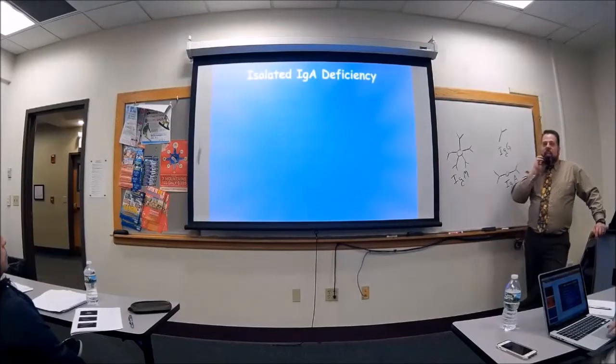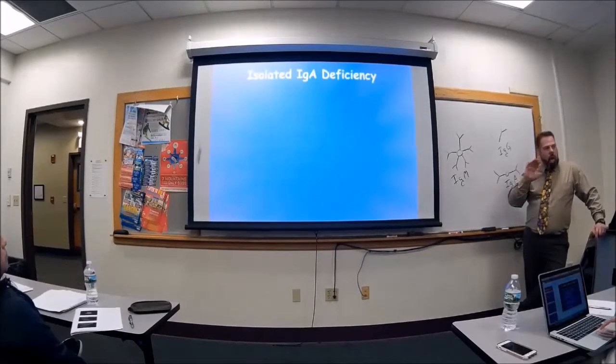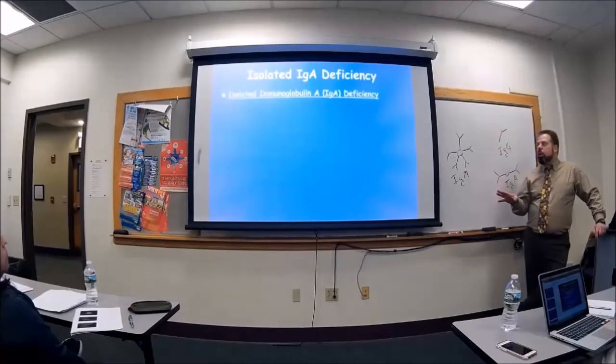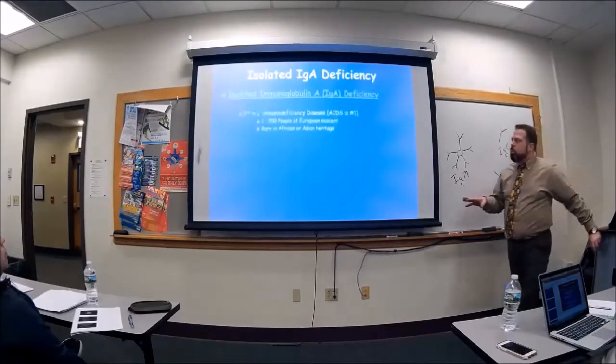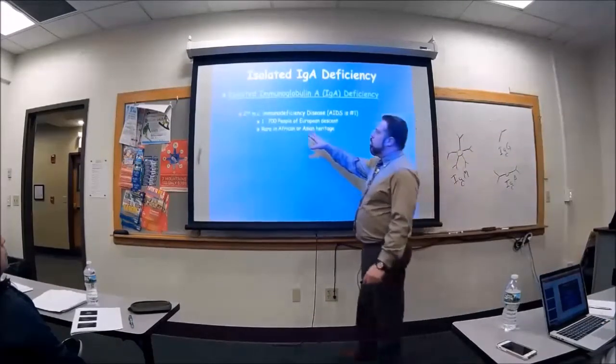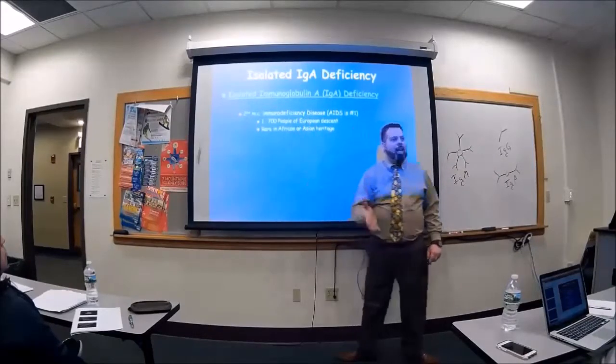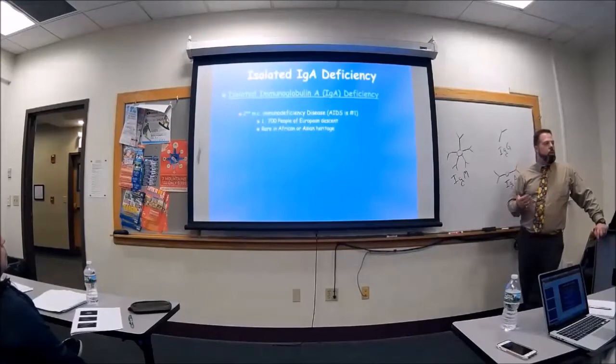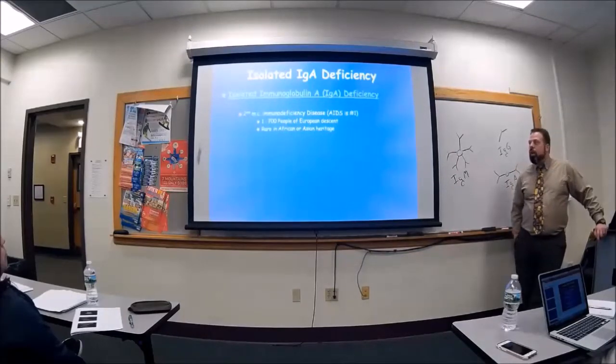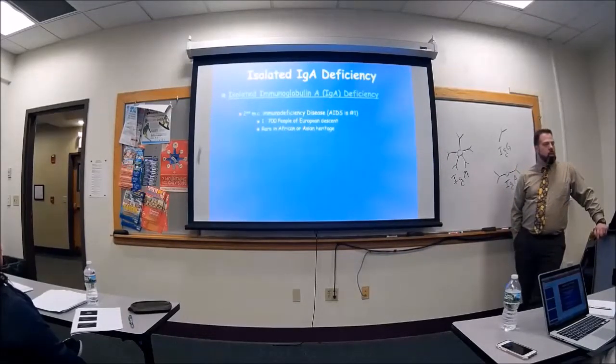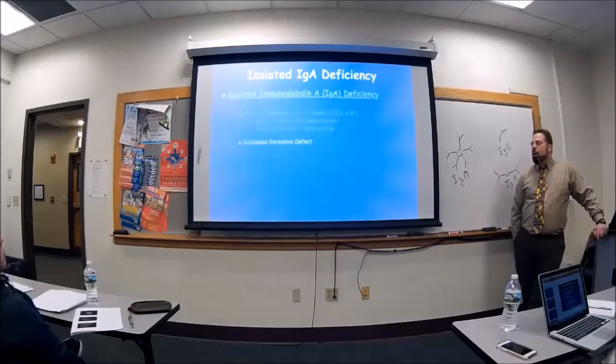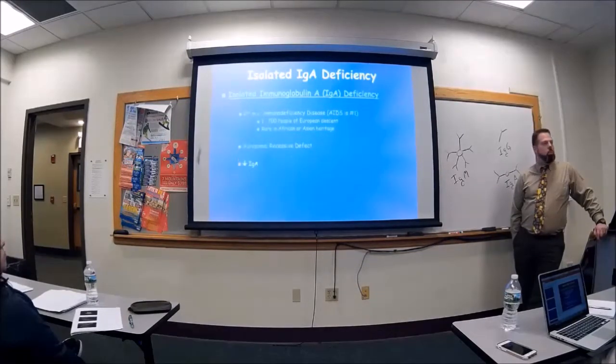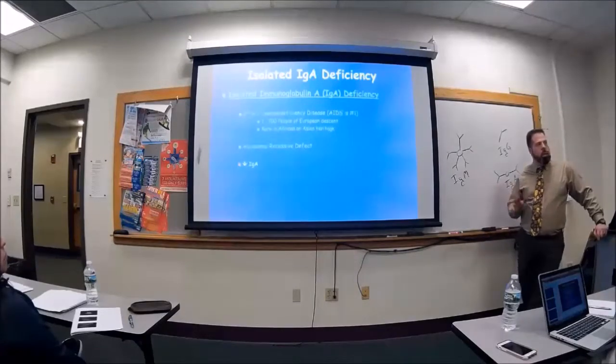Isolated IgA deficiency. This is where only IgA is missing. This is the second most common immunodeficiency disease next to HIV. This is pretty common. One in 700 Europeans have this. It's rare in African or Asian heritage. But this is pretty common. It's an autosomal recessive disease effect. So men and women are equal in getting this.